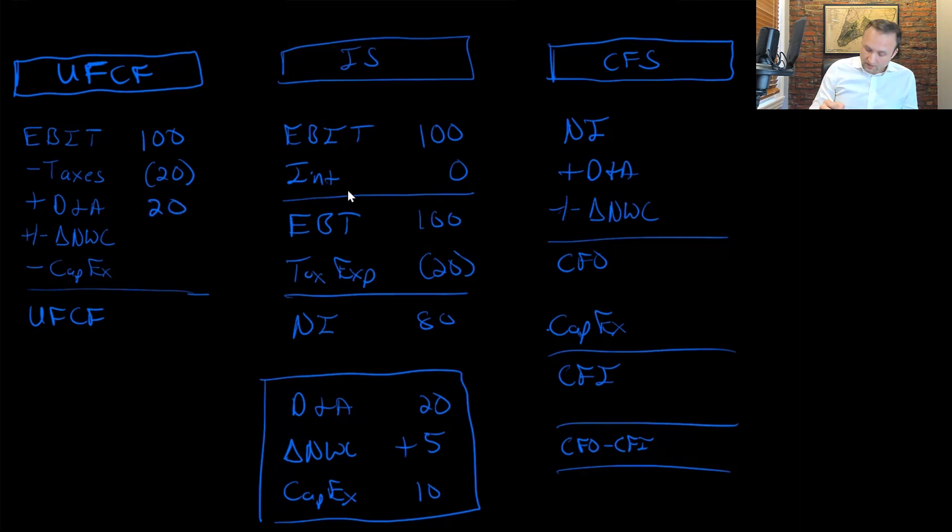Then we're going to adjust for the change in working capital. So working capital is going up by $5, which means that we have a $5 use of cash. And then at the bottom of the screen here, we have this $10 of CapEx, which is $10 out the door as well. So in the end, we have essentially 100 minus 15 because the two 20s cancel out here. So we have $85 of free cash flow.